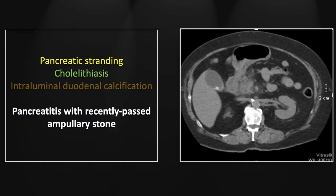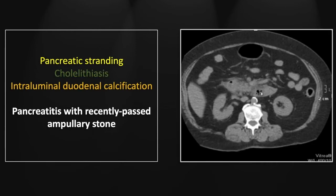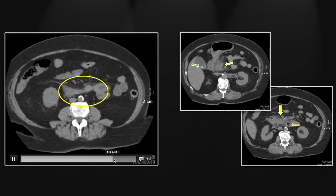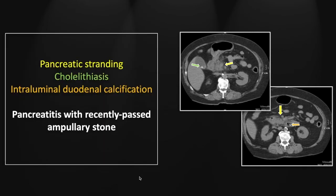Our next case is less pronounced, but it is a case of pancreatitis with a recently passed stone. You can see peripancreatic stranding here surrounding the head and uncinate process. In addition, there are numerous small gallstones. In the third portion of the duodenum, you can also appreciate the peripancreatic swelling, and within the duodenal lumen there is a small calcification consistent with a recently passed stone. The peripancreatic stranding is undeniably consistent with pancreatitis.